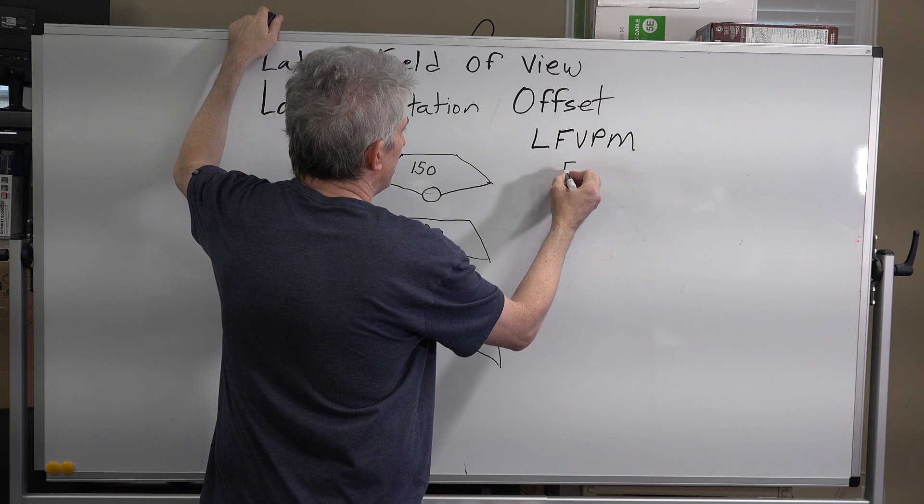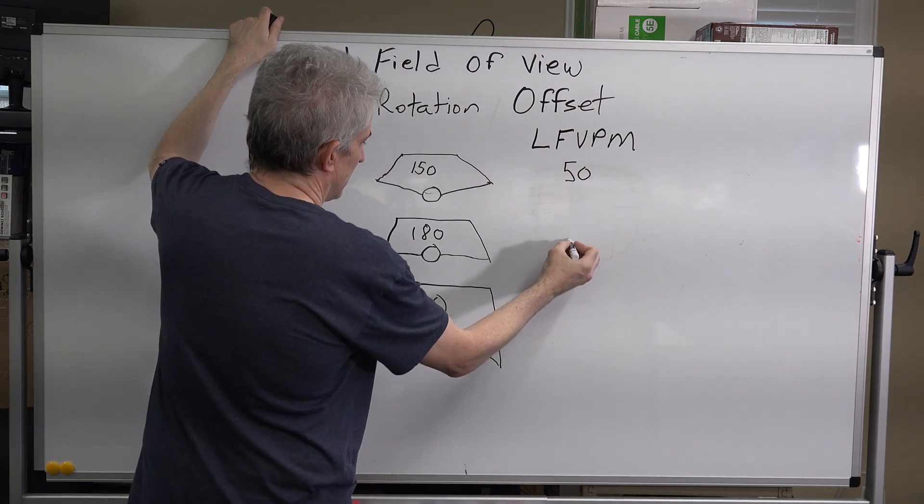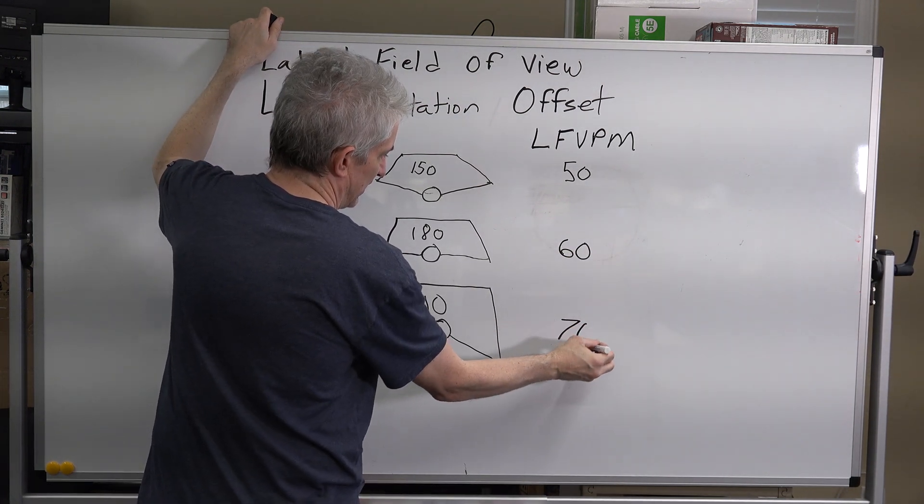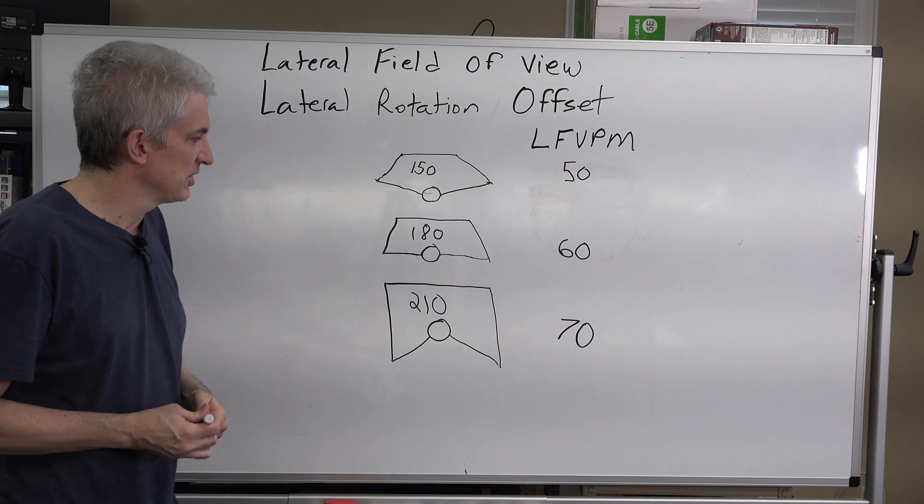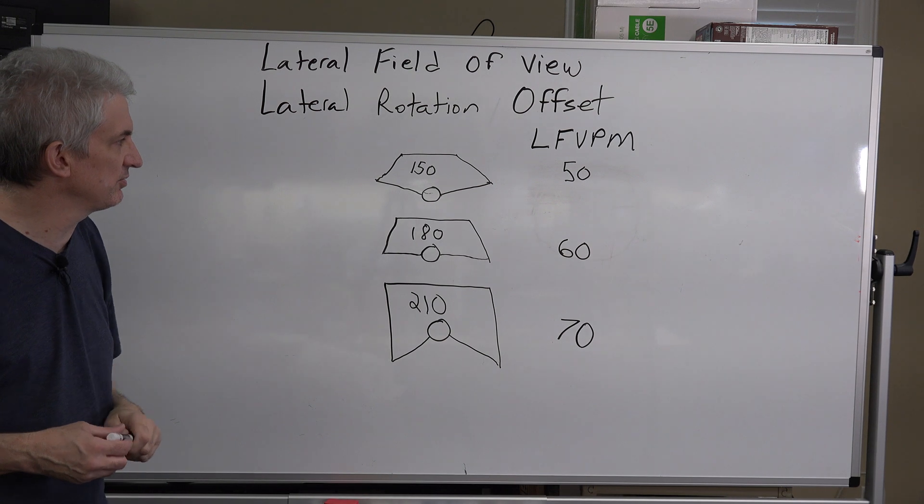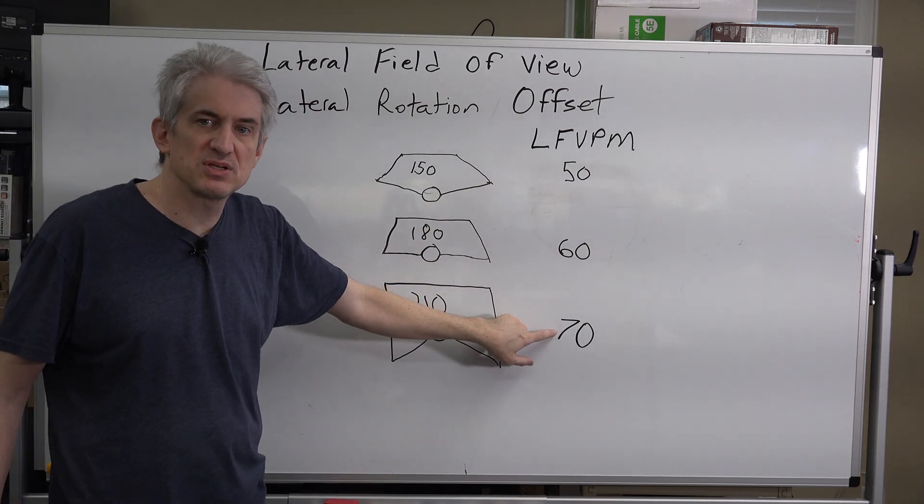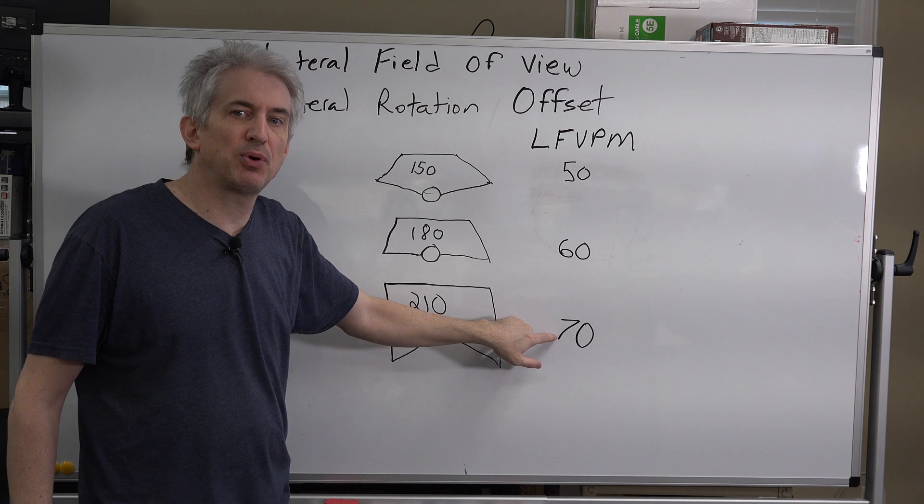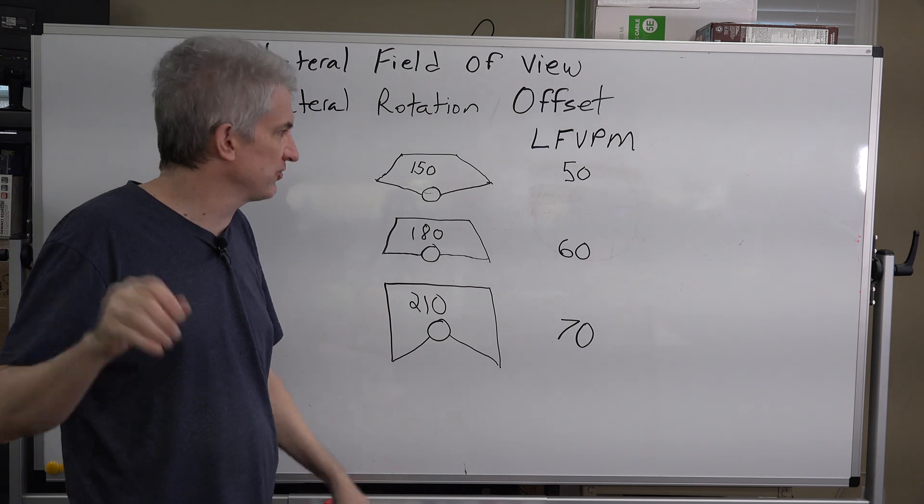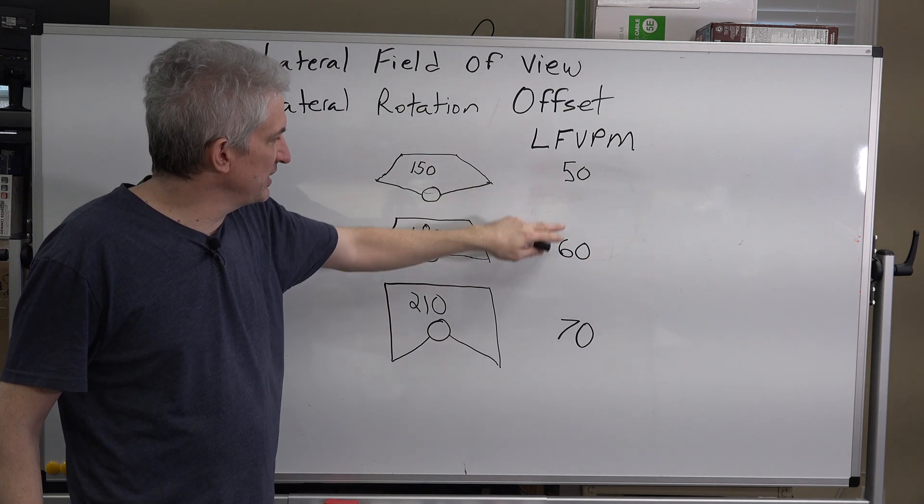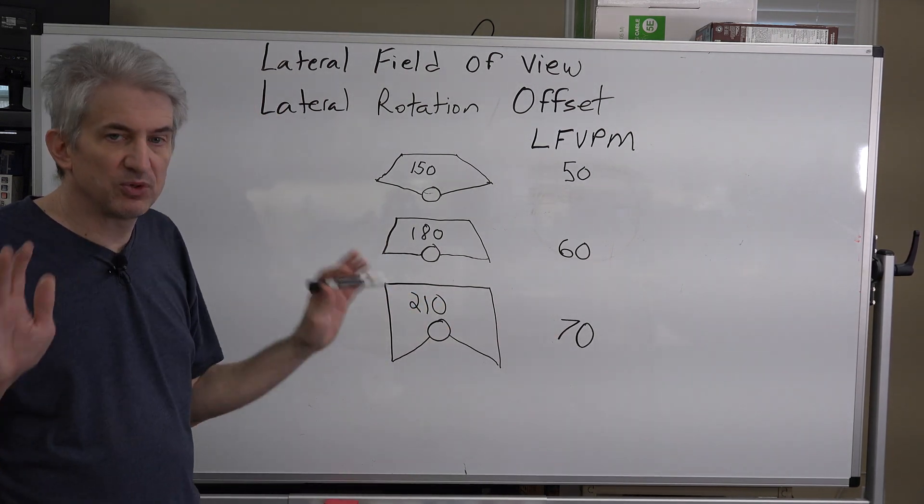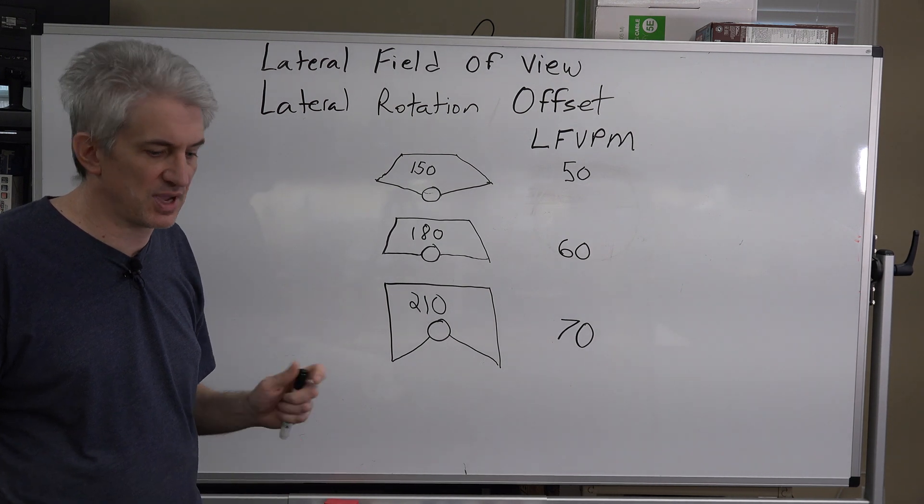Our lateral field of view per monitor here is 50. On here, it's 60. And down here, it's 70. 70 times 3 is 210, 60 times 3 is 180, 50 times 3 is 150. This number is important because this is the lateral field of view per monitor. So on each of your monitors in your graphics settings in X-Plane, you're going to set lateral field of view 50-50-50, 60-60-60, and 70-70-70 for all three monitors. We're doing this based on the monitors being the same size.